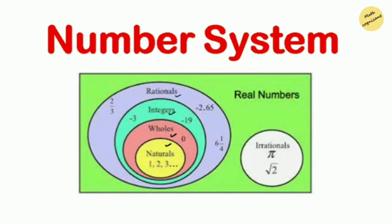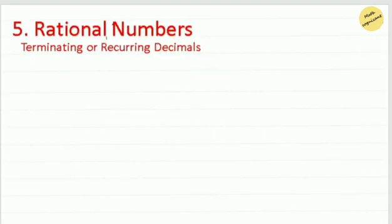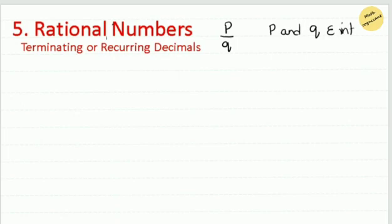The first concept we are going to discuss is rational numbers. The easiest way to define a rational number is that it can be represented as a ratio of two integers. Therefore, the numbers which can be expressed in the form of P over Q, where P and Q are integers and Q is not equal to zero — meaning the denominator cannot be zero — are called rational numbers.